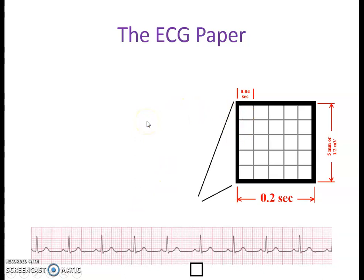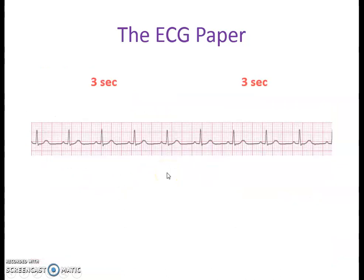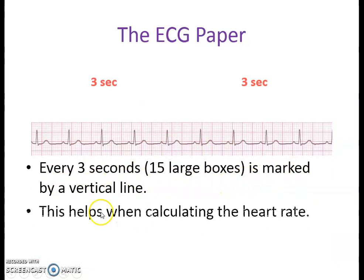So as we have already seen, horizontally one small box is generally 40 milliseconds and the larger box is 200 milliseconds, while vertically one larger box is equivalent to 0.5 millivolt. Generally on the ECG paper, every 3 seconds — that is 15 large boxes — is marked by a vertical line. This particularly helps when we are calculating the heart rate, which is calculated by measuring the R-to-R interval.